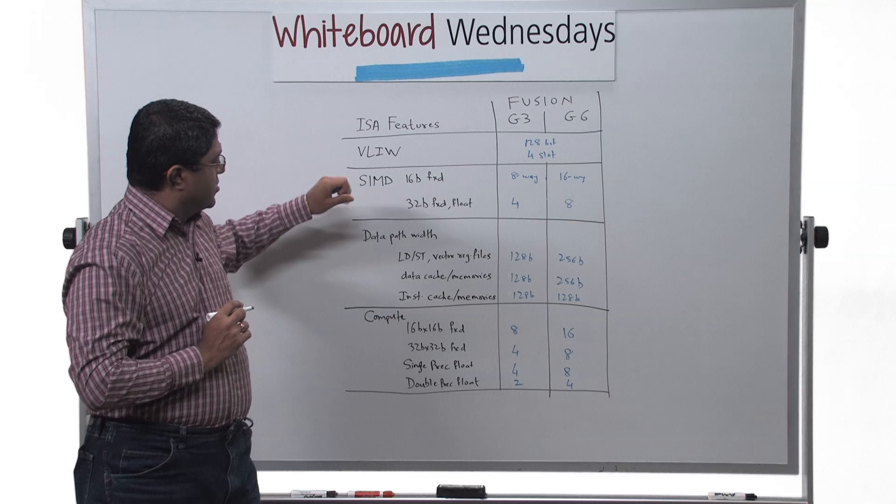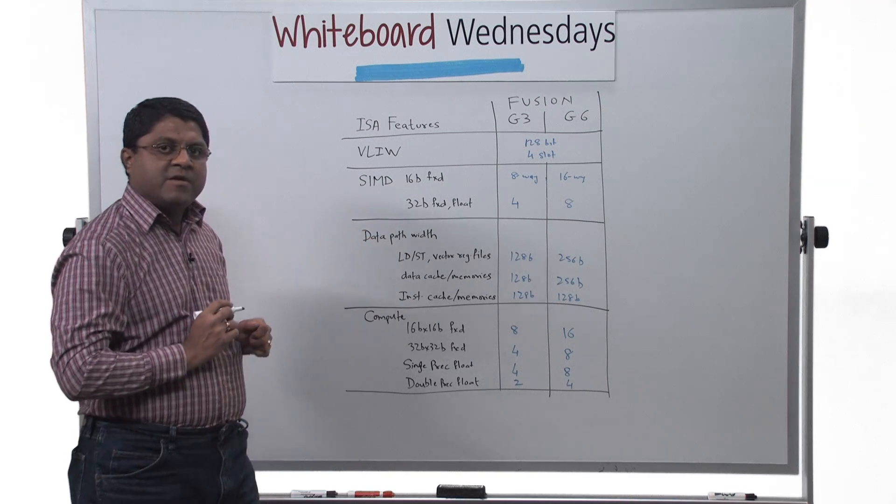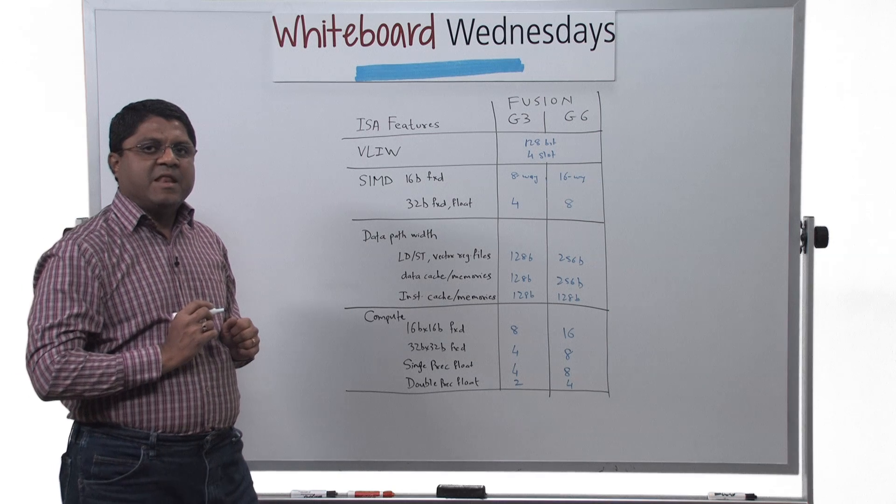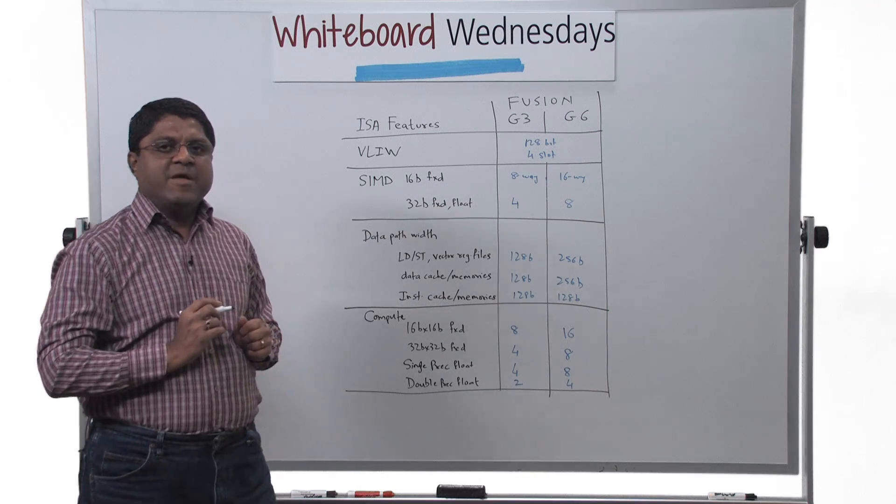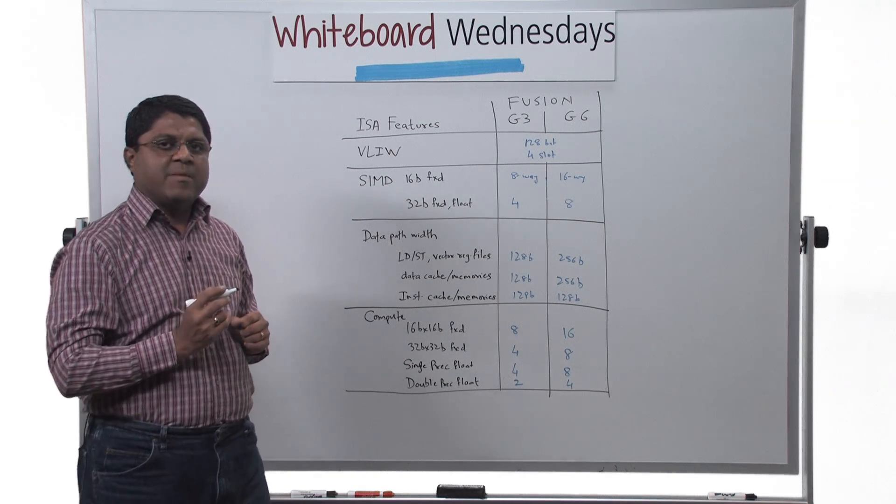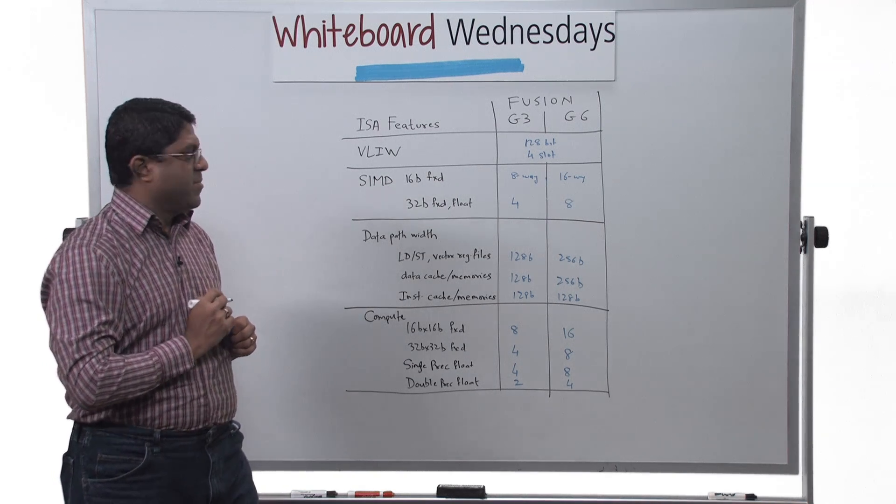In addition to these features listed here, both of the DSPs can be optionally enabled with an IDMA feature, an IDMA block, which is an internal DMA which can be used to transfer data between the local memories and the system memory.